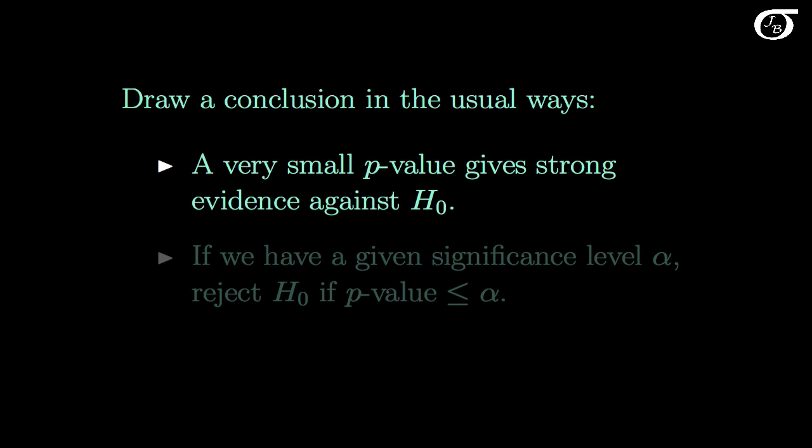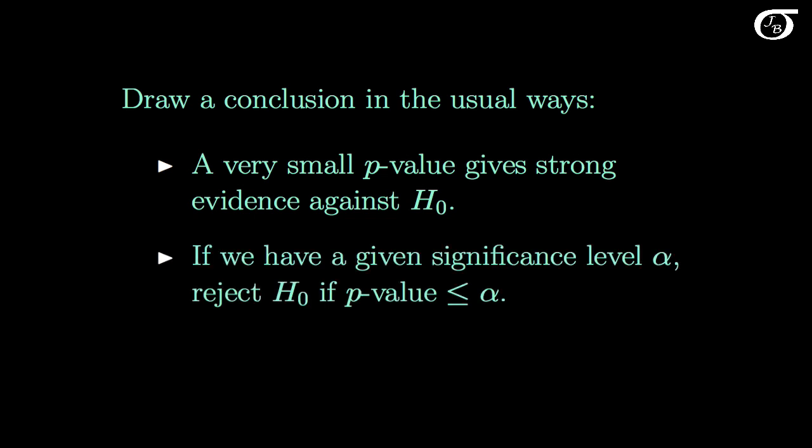We draw our conclusions in the usual ways. A very small p-value gives strong evidence against the null hypothesis and in favor of the alternative. Given a significance level alpha, we can reject the null hypothesis if our p-value is less than or equal to alpha. I work through an example of a pooled variance t-test and confidence interval in another video.